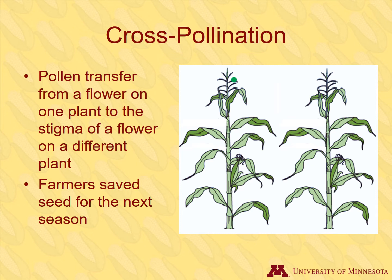To understand open-pollinated corn, let's explain cross-pollination briefly. Cross-pollination is the transfer of pollen from a flower on one plant to the stigma of a flower on a different plant. That's why we call all of the older corn types open-pollinated varieties — the corn plants are allowed to cross-pollinate and reproduce freely. In corn, wind helps facilitate the pollen transfer. Farmers who grew open-pollinated corn would save some of the seed produced to grow the following season. Open-pollinated corn often was not very uniform in appearance because it was not genetically uniform.